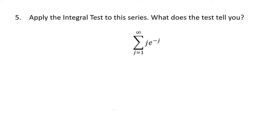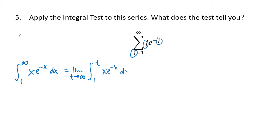Let's do one more integral test problem. We write the corresponding improper integral: the limit as t goes to infinity of the integral from 1 to t of x·e^(−x) dx. This requires integration by parts. We set u = x, dv = e^(−x) dx, so du = dx and v = −e^(−x). Integration by parts gives u·v minus the integral of v du, with the limit applied at the end.